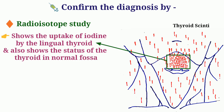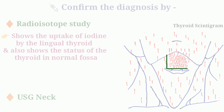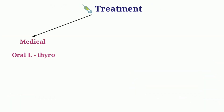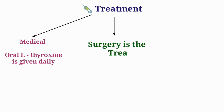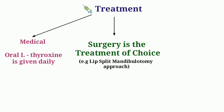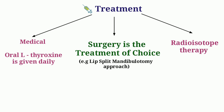This is the diagram of thyroid's scintigram, which shows exactly that. Ultrasound of the neck should also be done to confirm the absence of thyroid in its normal location. For treatment, oral L-thyroxine is given daily as medical management, but surgical excision is often required and is technically easier. Radioisotope therapy for ablation is also frequently used.